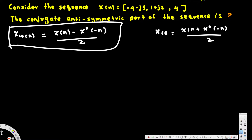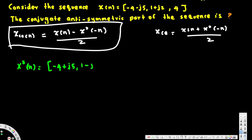We have x(n) given. Now we need x-conjugate of negative n. First, let's find x*(n) by changing the sign of the imaginary parts. So -4-j5 becomes -4+j5, and 1+j2 becomes 1-j2, and 4 stays as 4 since it has no imaginary part.